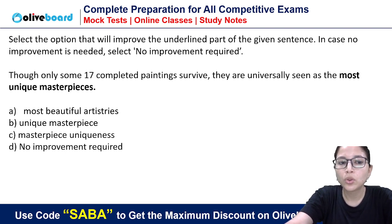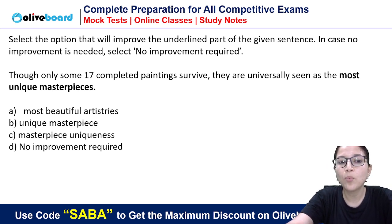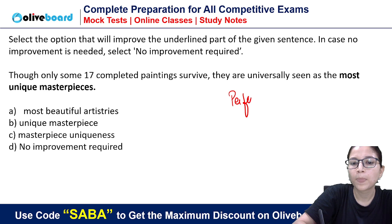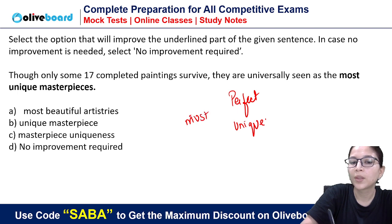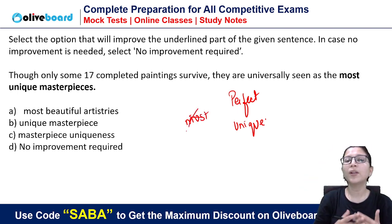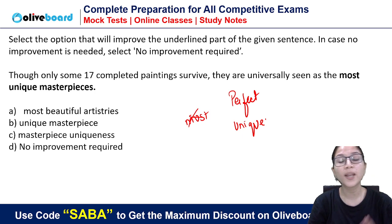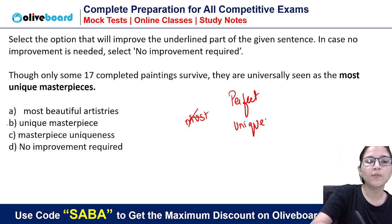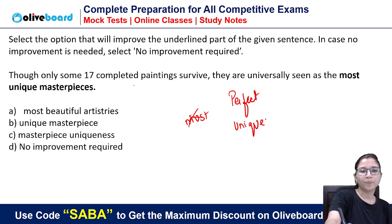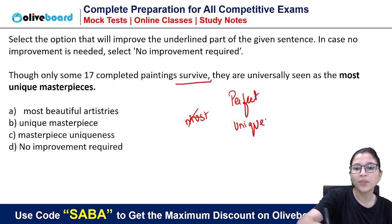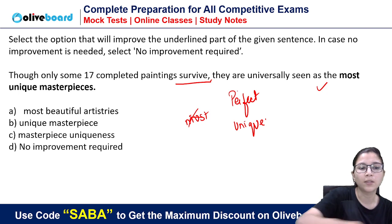Again, sentence improvement: 'Though only some 17 completed paintings survive, they are universally seen as the most unique masterpieces.' Now, there are certain words like 'perfect' and 'unique' — we don't use 'most' or 'more' before them, because these words already carry a superlative sense. So, simply the answer will be 'unique masterpieces.' They are universally seen as the unique masterpieces.